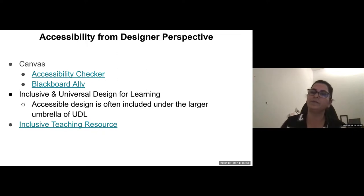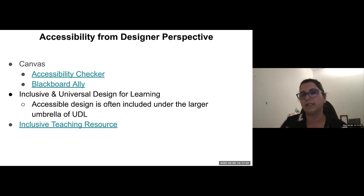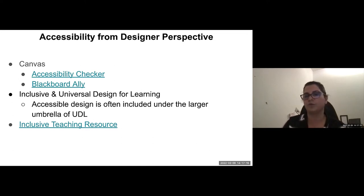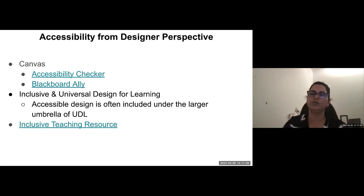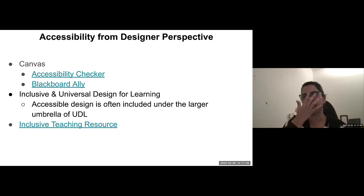Another tool I want to bring your attention to is Blackboard Ally, which helps you understand how accessible your course is and provides alternative formats for your course content automatically — things such as EPUB, audio, electronic, and Braille. It also shows you how the institution is doing overall based on the number of online courses. If you're interested, you may want to contact lthub.ubc.ca to request access to Blackboard Ally.